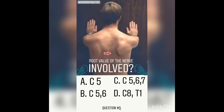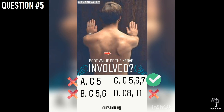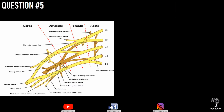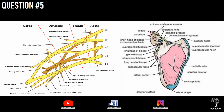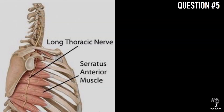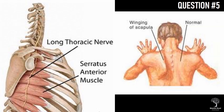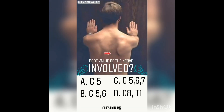Question 5. What is the root value of the affected nerve? The right answer is option C. The clinical condition shown in the picture is winging of the right scapula. You can see the prominent medial border of the right scapula. This happens due to paralysis of serratus anterior, which gets inserted onto the medial border of the costal surface of the scapula. Serratus anterior is supplied by the nerve to serratus anterior, also called the nerve of Bell or long thoracic nerve, arising from the roots of C5, C6, and C7 of the brachial plexus.